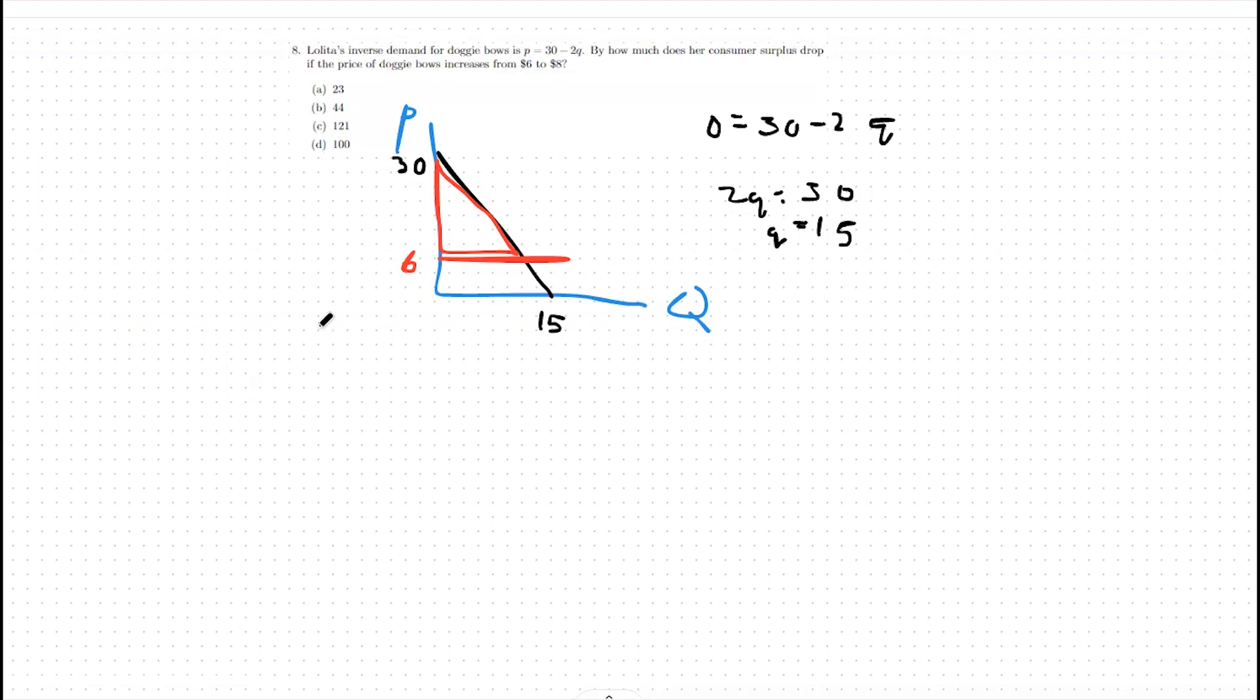So that's going to be this red triangle here, which will be 24 on our height. And then we can figure out our quantity here, which is going to be a price of 6 equals 30